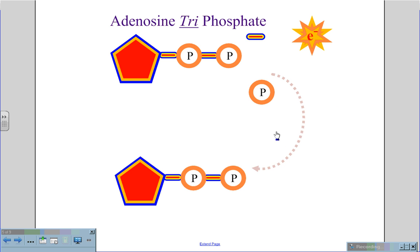This now gives us an ADP molecule, which will travel back to the light reaction, where another phosphate will be attached, and you will now again have ATP, which has three bonds of energy.